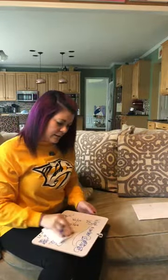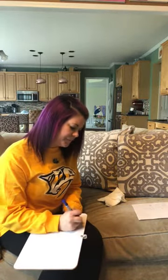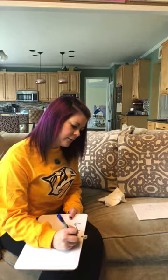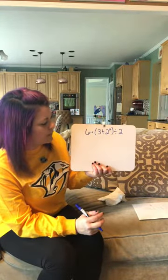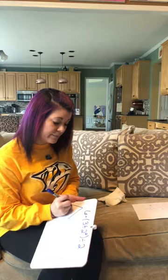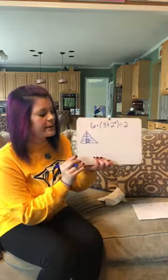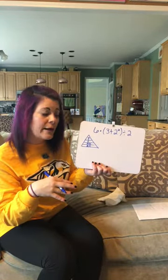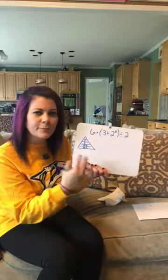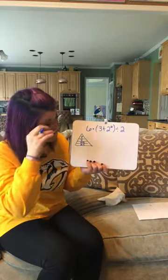The next problem deals with order of operations: 6 times (3 plus 2 squared) divided by 2. PEMDAS — I show this with a pyramid in my video because multiplication and division are on the same level. You don't do multiplication before division; it's left to right. A lot of people get these wrong, even adults on Facebook or Instagram.